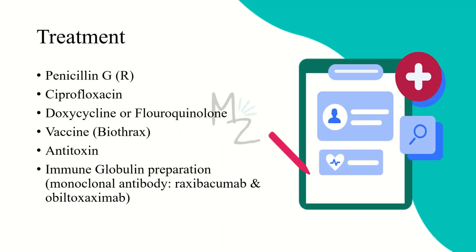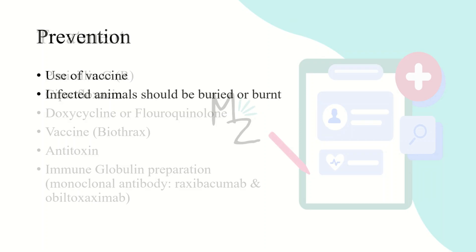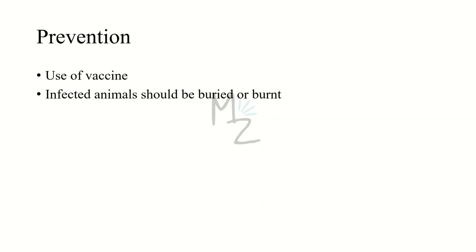Treatment: this bacterium may release beta-lactamase, so it might be resistant to penicillin. The drug of choice is ciprofloxacin, with doxycycline as an alternative; there are no resistant strains to these. Cell-free vaccines are available. Antitoxins include immunoglobulin preparations containing monoclonal antibodies against the protective antigen — raxibacumab and obiltoxaximab. Prevention: infections can be prevented by vaccination and by incinerating animals that die of anthrax rather than burying them, to prevent soil contamination with spores. If incineration is not possible, then burial is the alternative.